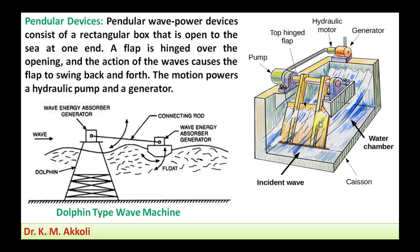Another machine is the duck-type device. It consists of a float that rotates about its own axis and also moves up and down while rotating. This absorbs wave energy and generates electricity. The up and down motion is converted from reciprocating motion into rotary motion, and that energy is also absorbed and used to produce electricity by connecting to a generator.